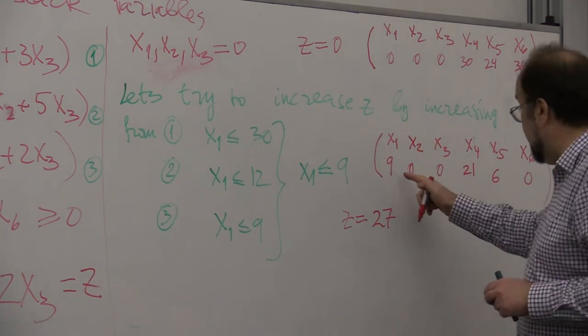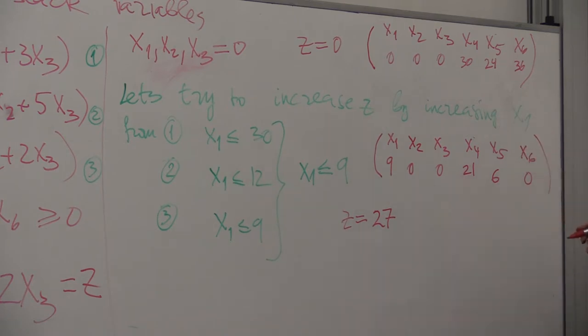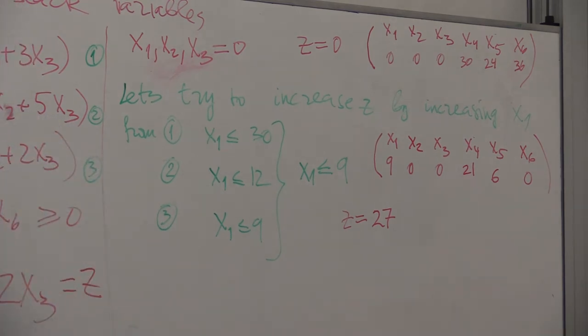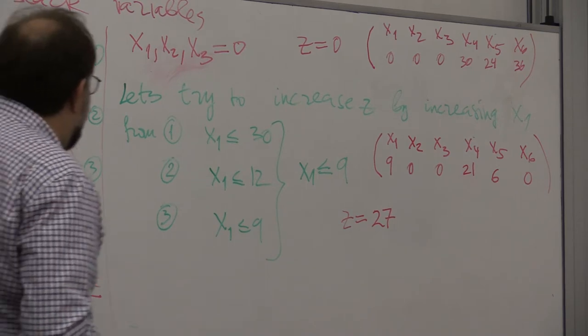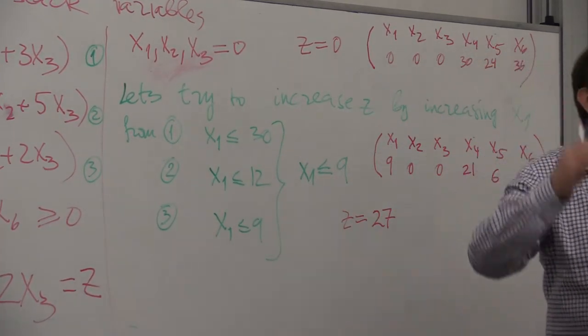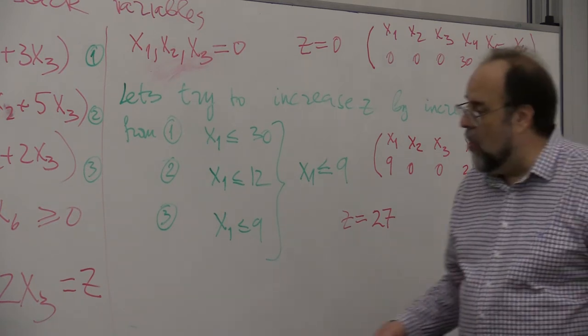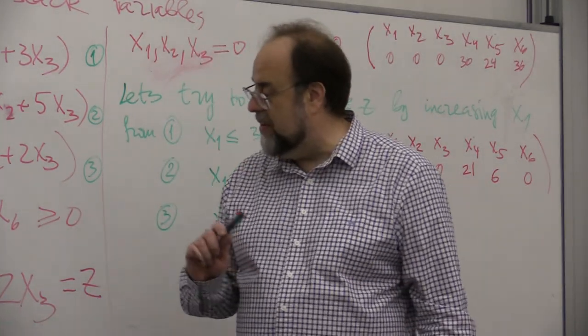And the value, so you see, this combination of variables keeps everything okay, but the z value increased. Now the trick is, because I can no longer increase x1, I will solve this equation for x1 in terms of x2 and x3, and x6, replace, eliminate x1 everywhere from the constraints and from the objective, and then try to push other variables up, and I keep doing that until all of the coefficients in the objective become negative, and consequently, you cannot increase the value further.